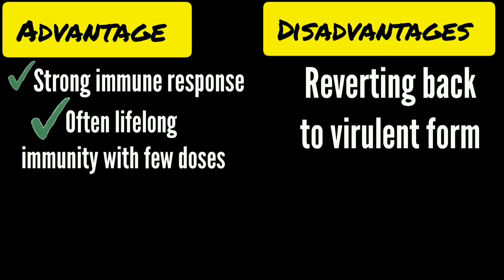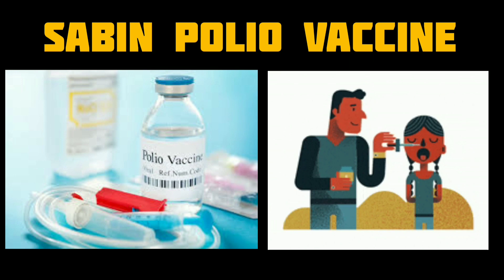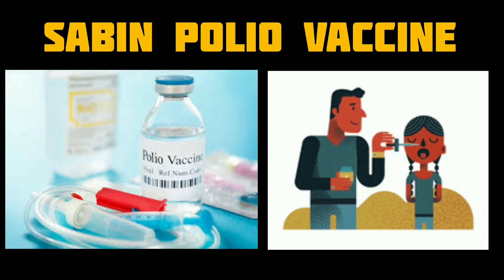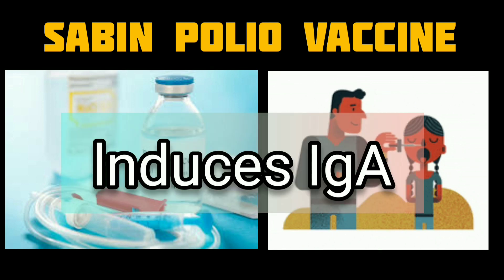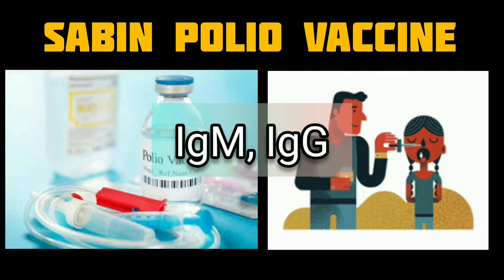Examples of live attenuated vaccines include the Sabin polio vaccine, consisting of three attenuated strains of poliovirus, which is administered orally to children. In the intestines, it induces production of secretory immunoglobulin A, which serves as an important defense against naturally acquired poliovirus. It also induces immunoglobulin M and immunoglobulin G class antibodies.